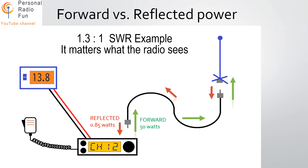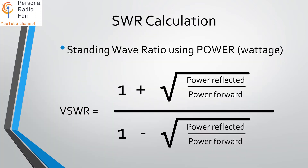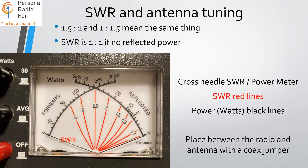With SWR, what matters is what the radio sees, so you want to take the reading as close to the radio as possible, because too high an SWR can damage the radio. Voltage relates to power — again, you won't have to do this formula, it just shows the relationship. It's a ratio.